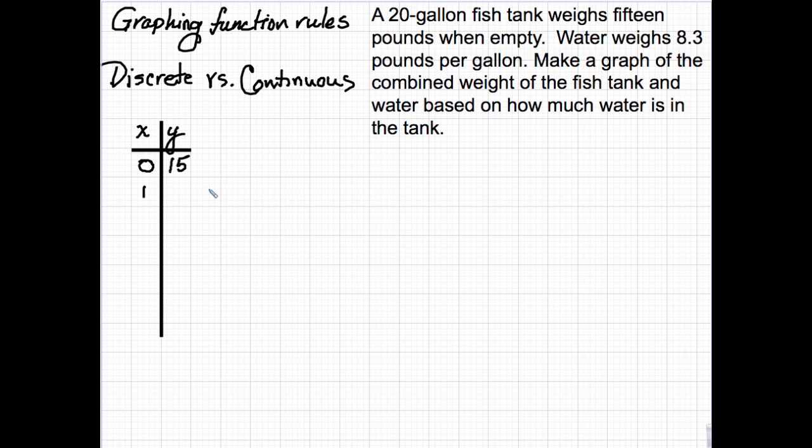Now, if there are zero gallons of water in the tank, then the tank is just going to weigh 15 pounds. If there's one gallon of water, that's going to be 8.3 times one gallon plus 15 pounds, and that will be about 23.3 pounds. And for two gallons, 31.6 pounds, and for three gallons, 39.9 pounds. And we can see that the function is going to be 8.3x plus 15 equals y.